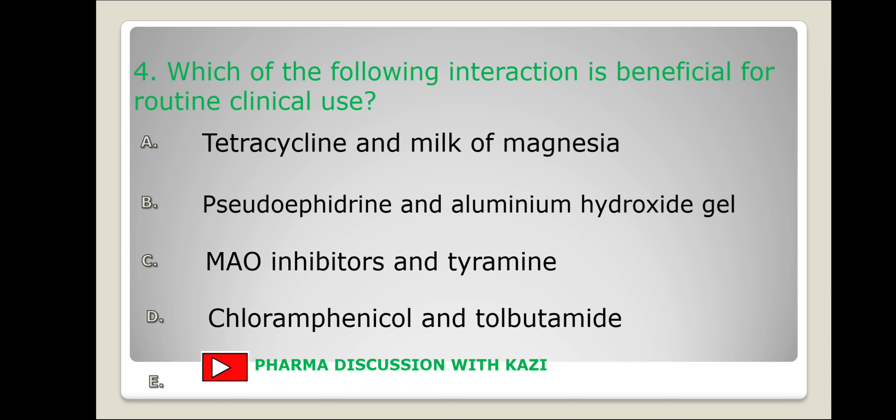In the fourth case, chloramphenicol reduces hepatic metabolism of tolbutamide and leads to its accumulation. As a result, hypoglycemia may occur. So we have found that option B — pseudoephedrine and aluminium hydroxide gel — is the beneficial interaction for routine clinical use.